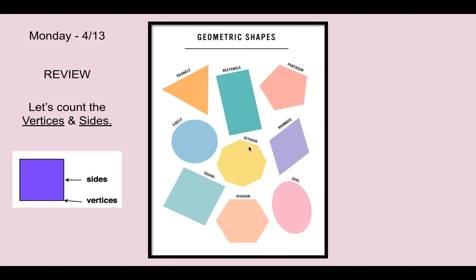Let's look at our octagon. If we're counting our vertices, we count one, two, three, four, five, six, seven, eight. If we count the sides: one, two, three, four, five, six, seven, eight. Eight sides, eight vertices.